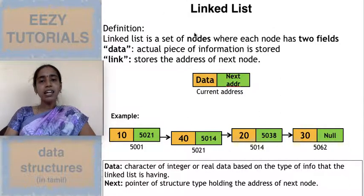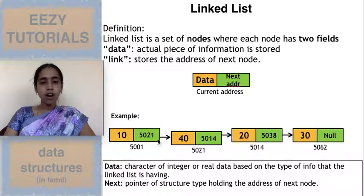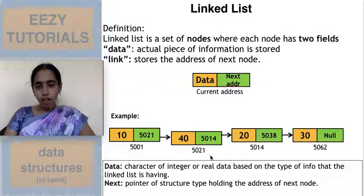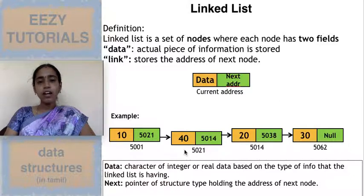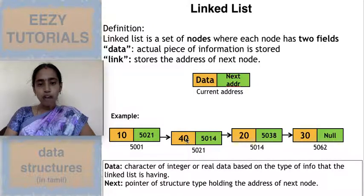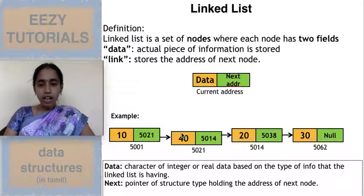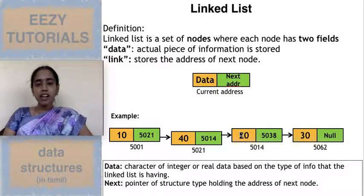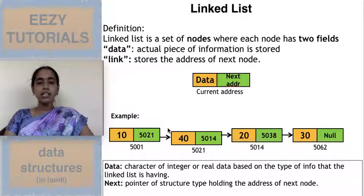Now I want a link so that I can access each element one by one. What I can do is use a linked list. Near the data itself I have one field called link or next. This next field stores the address of the next node. The address of 40 is 5021, so I store 5021 along with 10. Moving to 5021 gives me element 40, and the address nearby 5014 gives the next element. Always the next element's address is stored along with the current element — that is called a linked list.